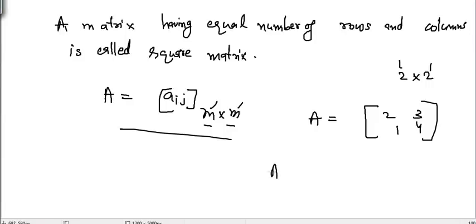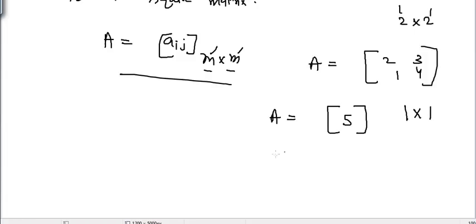If I write A is equal to 5, just a single element here, then it's also a square matrix because its order is 1 cross 1 and the number of rows is equal to the number of columns. Similarly you can write infinite number of examples.